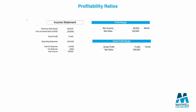Next we have the profitability ratios, and we only need the income statement for this. We're trying to figure out how much of our revenue turns into net income or gross profit. First, let's look at the profit margin ratio — for every $1 of sales, how much becomes net income? We have $102,000 of net sales and $49,500 of net income, giving us 48.5%. This means that for every $1 of sales, we have $0.485 of profit, and conversely $0.515 of expenses.